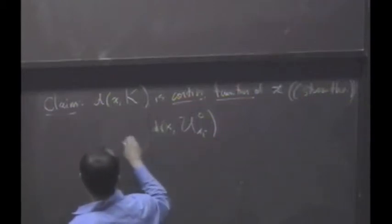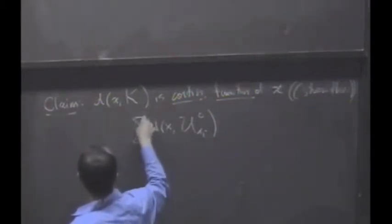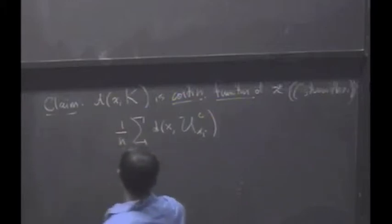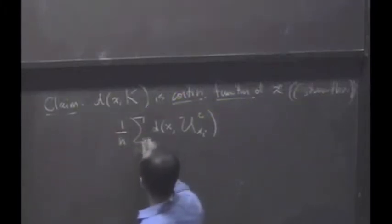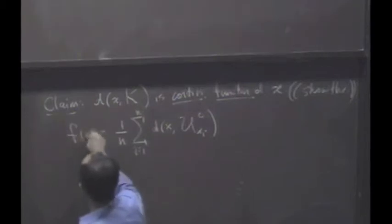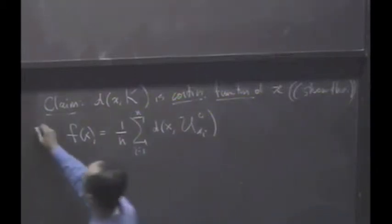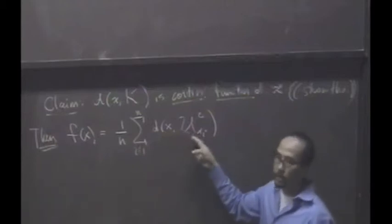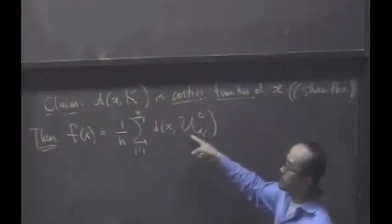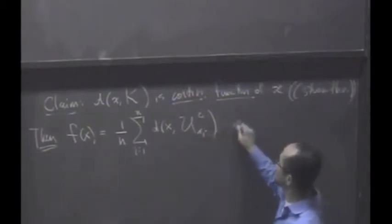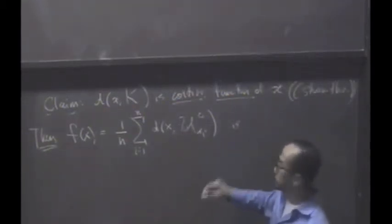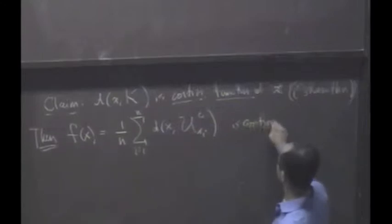Well, look, you can't stop me from adding all these up and dividing by n. So this takes their average, i goes from one to n. This is a function of x. What can I say about this function, which is the average distances to the complements? It must be continuous because it's a sum of continuous functions, right?